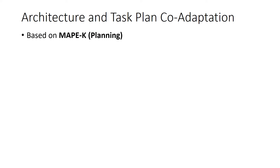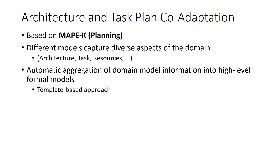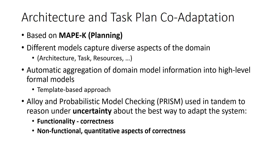Our approach to architecture and task plan co-adaptation is based on the MAPE-K model, and is specifically designed to be integrated as part of its planning stage. It assumes a set of domain models in MAPE-K's knowledge base capturing different aspects of the domain, such as the software architecture, tasks, or resources like energy. From these models, we extract information to populate formal model templates used as input to different formal analysis tools. Concretely, our approach is instantiated using Alloy and the probabilistic model checker PRISM, used in tandem to reason under uncertainty about both functional correctness and non-functional aspects, which are analyzed quantitatively.